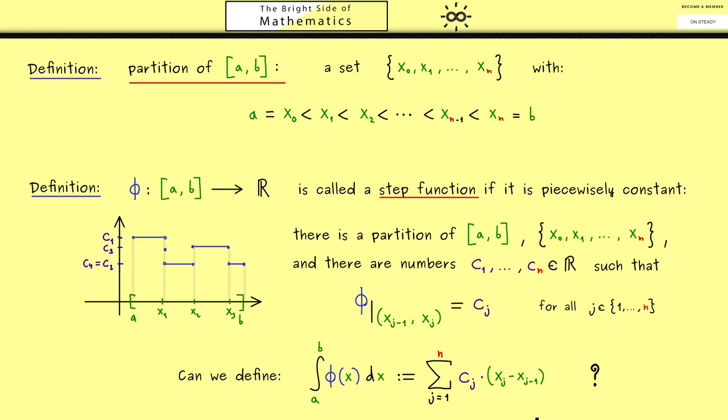However, what we need to answer here is: is this a correct definition? Because at first it seems that there are a lot of possibilities to choose a partition of the interval and also to choose the numbers c_j. However, here on the left-hand side, neither the partition nor the numbers c_j occur. In summary, what we need to show is that this here is well-defined.